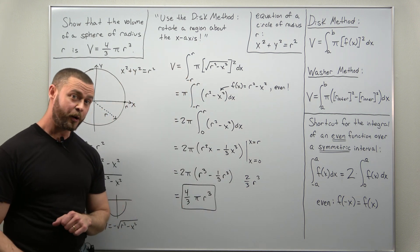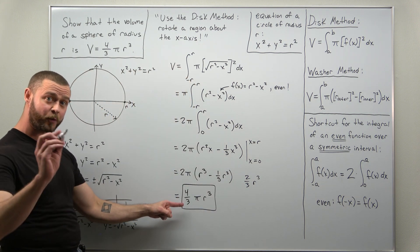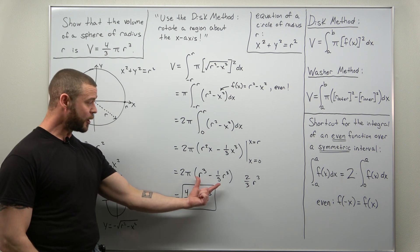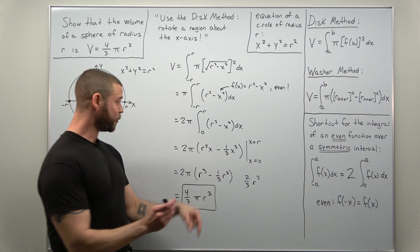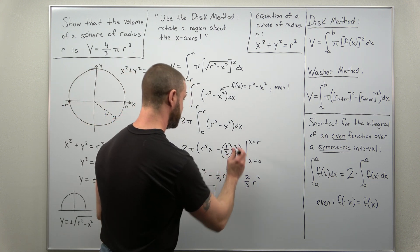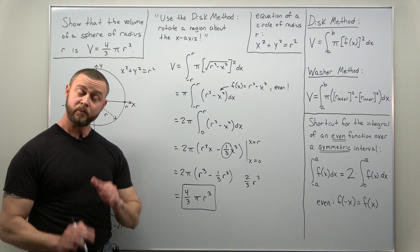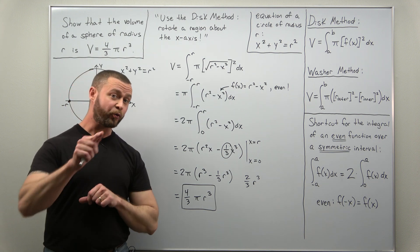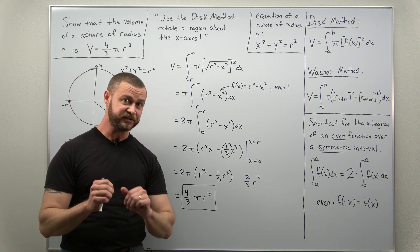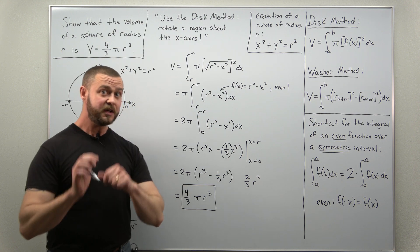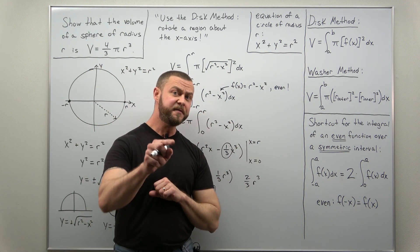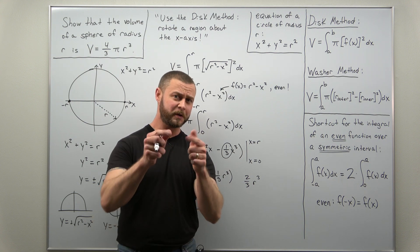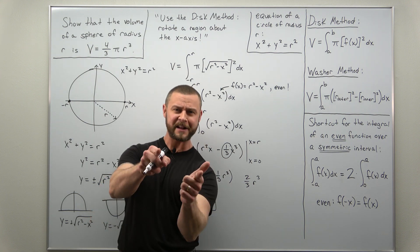And there we go, we see where the factor of four-thirds comes from. It's basically from the power rule for your anti-derivatives. All right, and that's it, that's how we derive volume formulas for special solids here using the disk method. Hope you enjoyed this video, if you did support the channel like and subscribe.